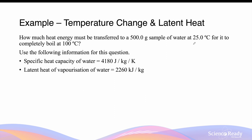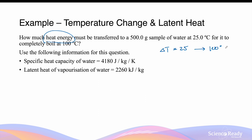The next question asks: how much heat energy must be transferred to a 500-gram sample of water at 25 degrees Celsius for it to completely boil at 100 degrees Celsius? Boiling here refers to the transition from liquid state into gaseous state. We are given the specific heat capacity of water, which is 4180 joules per kilogram per kelvin, and the latent heat of vaporization, which is 2260 kilojoules per kilogram. There are two parts to consider: first, raising the temperature from 25°C to 100°C, and second, the latent heat of state change from liquid into gas.